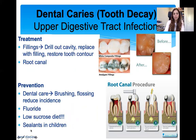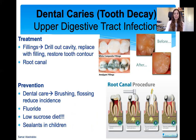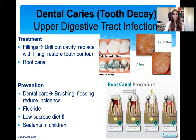Treatment involves fillings — refilling the eroded area so you don't get more decay into the dentin and pulp — and root canal in bad circumstances. Prevention is really good dental care: brushing teeth, flossing, lowering sucrose diet, fluoride, and sometimes children get dental sealants for an extra layer of protection when they're not brushing consistently.